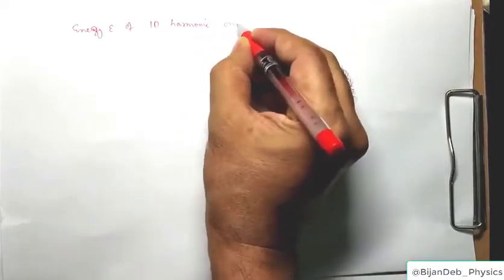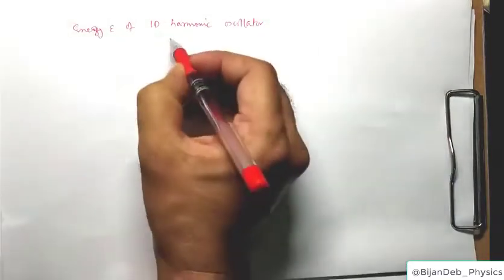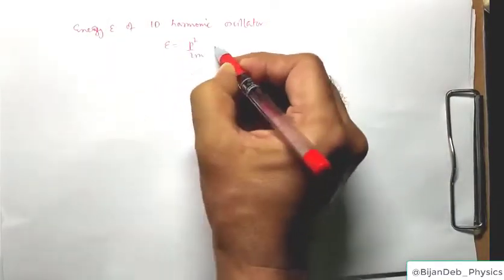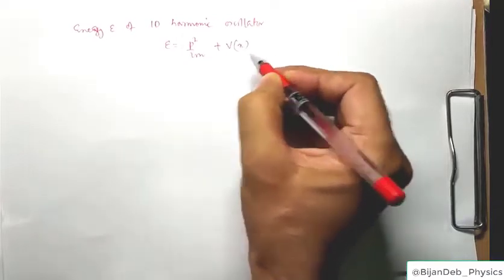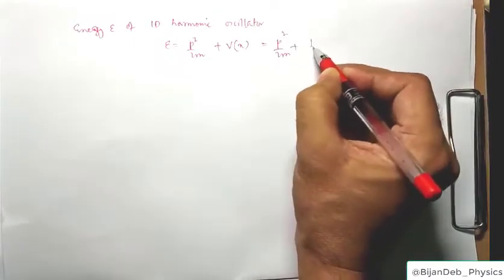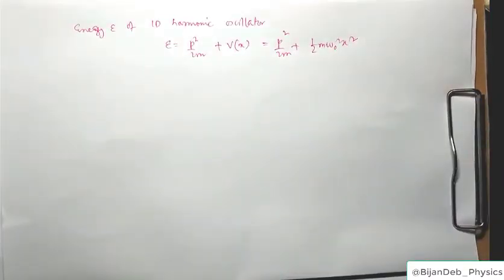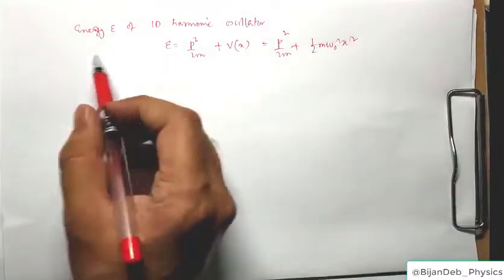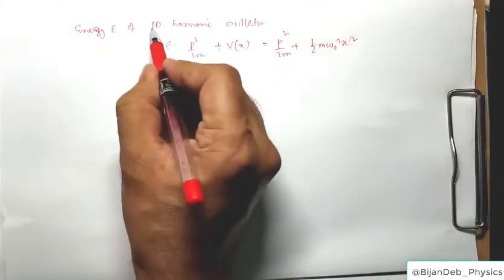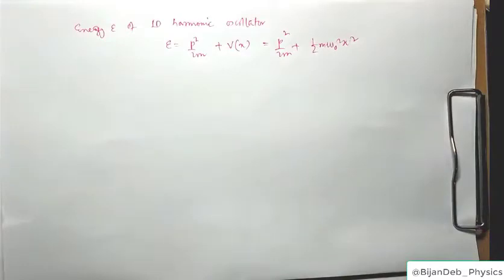The energy of a one-dimensional harmonic oscillator is given as E = p²/2m + ½mω₀²x², where the first term is kinetic energy and the second is potential energy. This is the energy expression for each of the 3N one-dimensional oscillators.